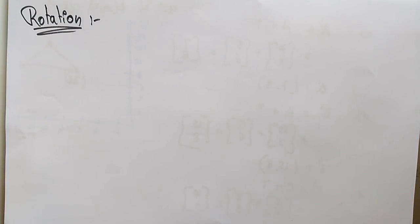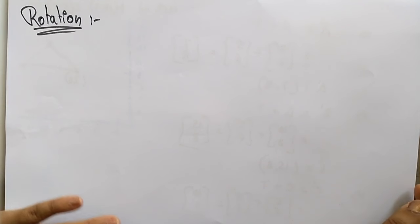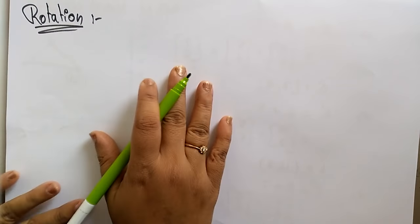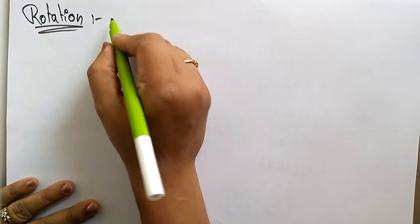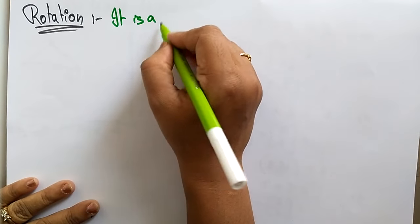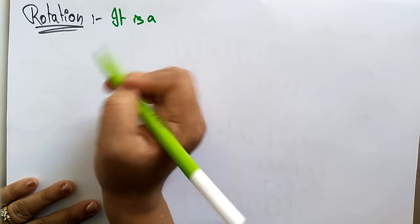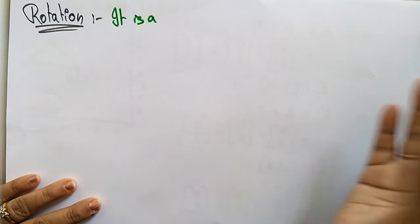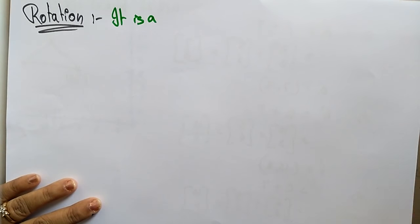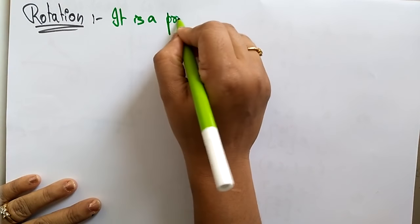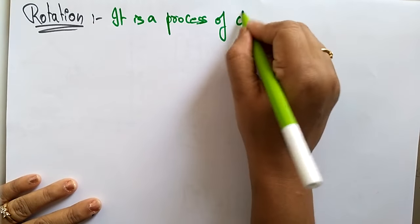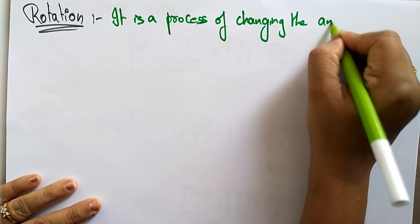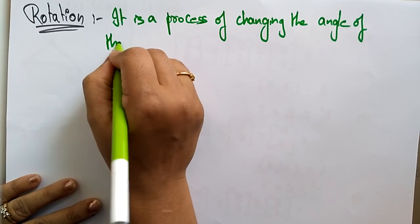Welcome back. Now coming to the next type of 2D transformation, that is rotation. In the previous video I explained about how translation occurs in the form of changing an object after creation. Now let's see rotation. Rotation is a process of changing the angle. Whenever you hear 'rotation,' it always comes with angles. You can rotate the object by an angle — whether 90 degrees, 170 degrees, 260 degrees, 360 degrees — like that.